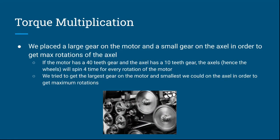Torque multiplication: you want to make your gears spin as fast as possible so that your axles spin as fast as possible. We placed a large gear on the motor and a small gear on the axle to get maximum rotations. The motor spins at a constant rate, but because one tooth on the motor gear corresponds to one tooth on the axle gear, if the axle gear has much fewer teeth, it will spin multiple times for every one rotation of the motor gear.